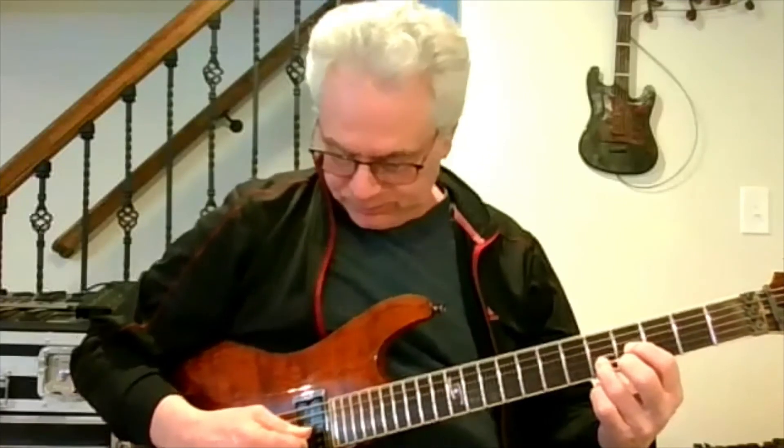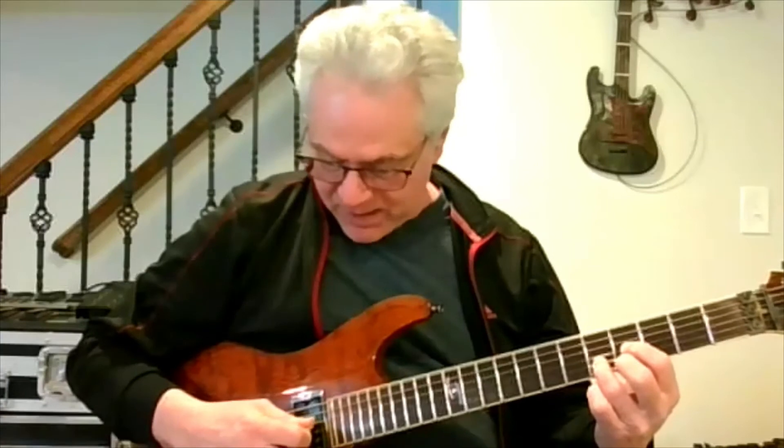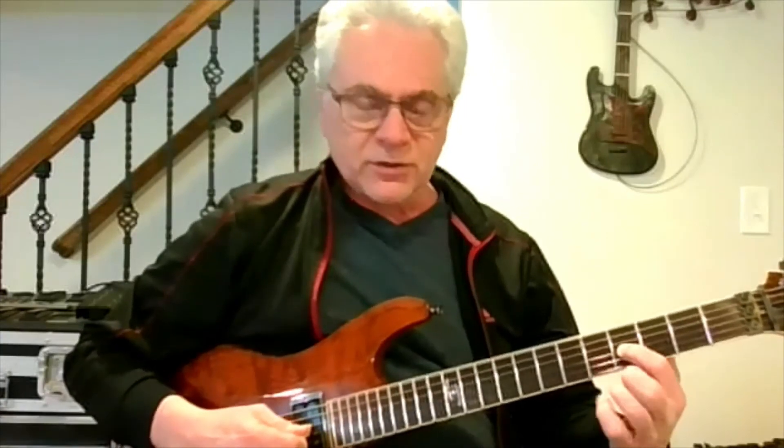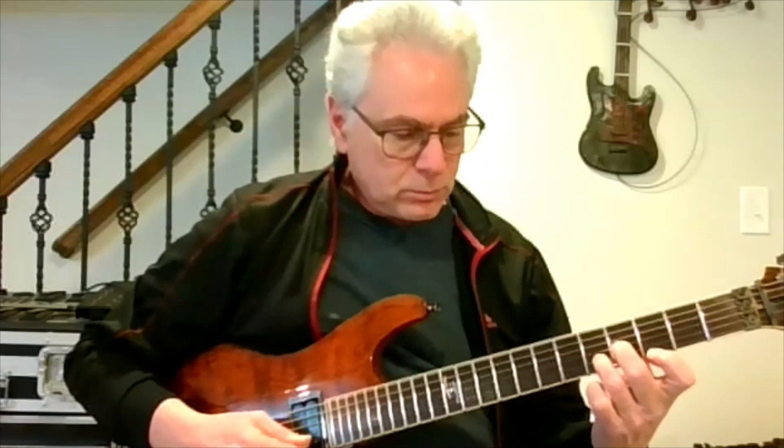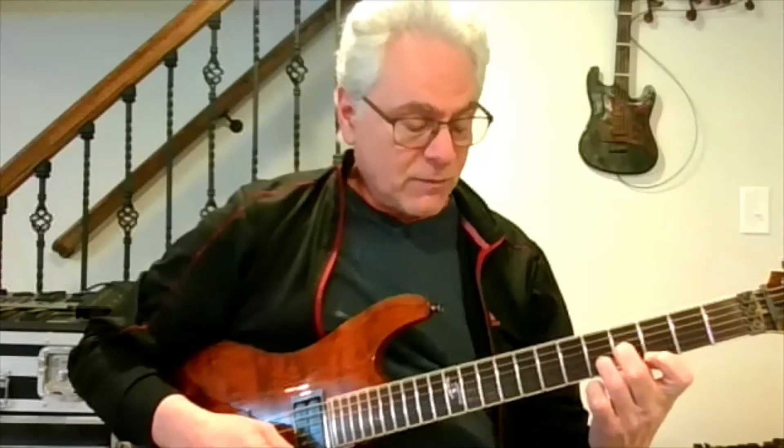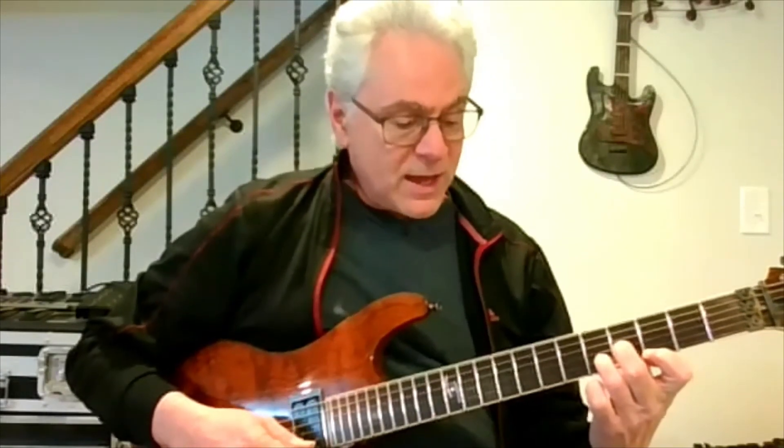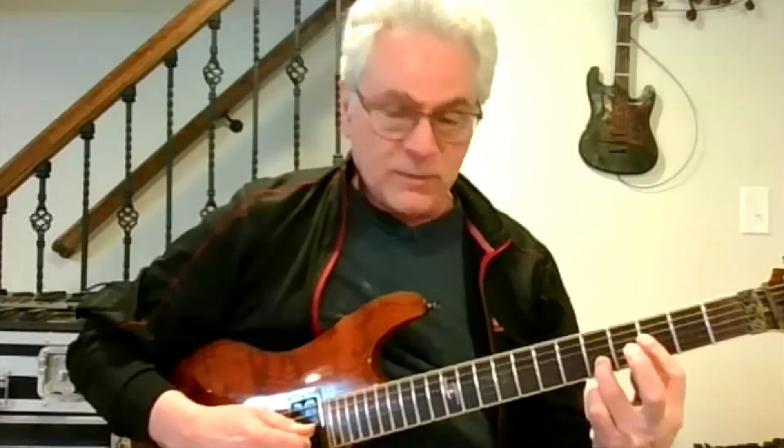Here's our E major triad. And we have the fifth in the bass, right here. That's our B, our root, and our third which is G sharp. Now to create the E minor triad, we flat the third. When I mean third, I mean the third degree of the chord. And then to make an E diminished, we not only flat the three, but we flat the five.